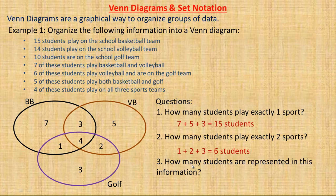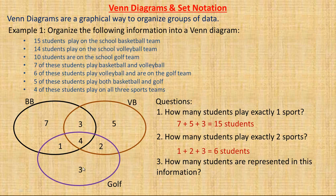The third question: how many students are represented altogether? Without the diagram you might think to just add 15, 14, 10, etc., but you can't do that because many students are double-counted or even triple-counted. Instead, add up each individual region of the diagram: seven, one, four, three, five, two, and three. Those are all the people playing one, two, or all three sports. Adding those up gives 25, so there are only 25 students here altogether.